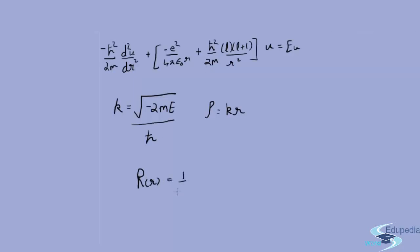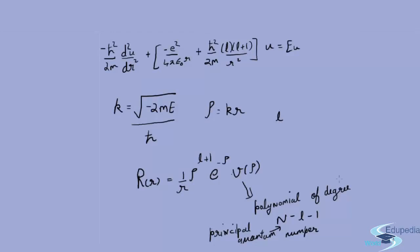When we make these substitutions, R of r will come out to be 1 by r times rho to the power L plus 1 times e to the power minus rho times v of rho, where v of rho is a polynomial of degree n minus L minus 1, where n is called the principle quantum number. It will only be non-zero when n minus L minus 1 is maximum 0, or L has the values 0, 1, 2 till n minus 1.